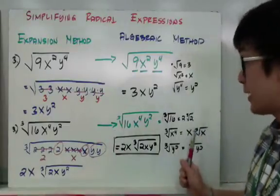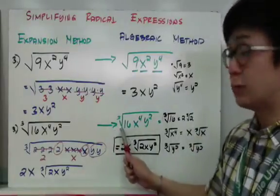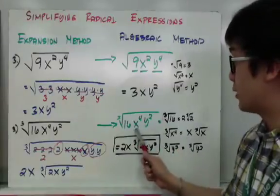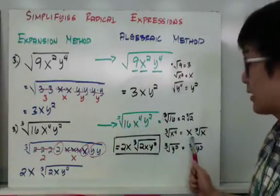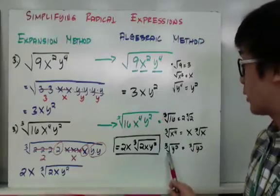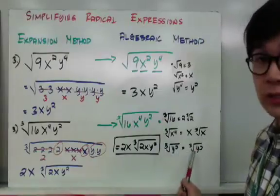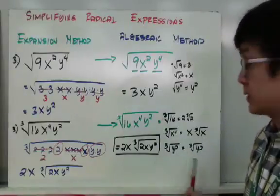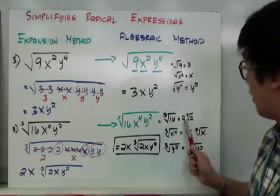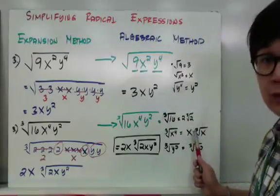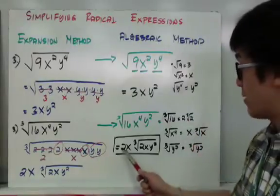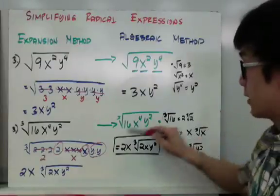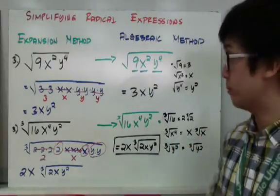Using the algebraic technique: cube root of 16 is 2 cube root of 2, cube root of x to the fourth is x cube root of x, and cube root of y squared remains cube root of y squared since it cannot be simplified. Combining terms outside and inside the radical gives the same simplest form.